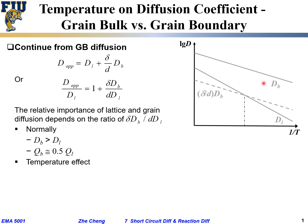Typically D_B is greater than D_L at any given temperature, so the grain boundary line sits higher than the lattice line. But since Q_B is only half of Q_L, when plotting log D versus 1/T, the slope represents activation energy. Therefore the slope for the grain boundary curve is less in absolute value than the slope for the lattice — the lattice diffusion coefficient changes faster with temperature.